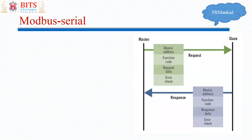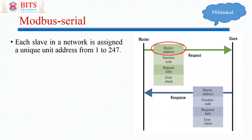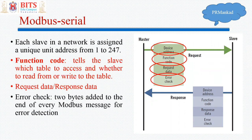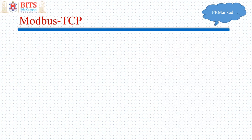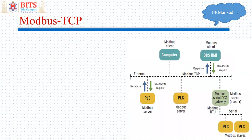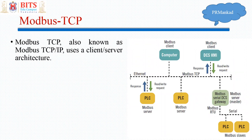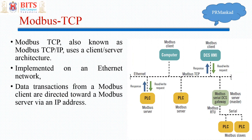In Modbus Serial, the master and slave communicate in a request-response fashion. The frame consists of device address, function code, request data or response data. Modbus TCP is generally Ethernet-based, using a client-server type of communication. Modbus TCP/IP uses a client-server architecture and works on an Ethernet network.